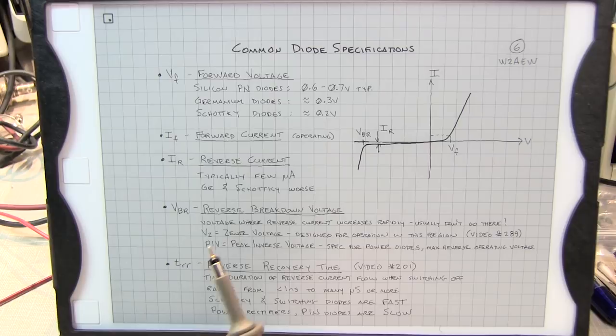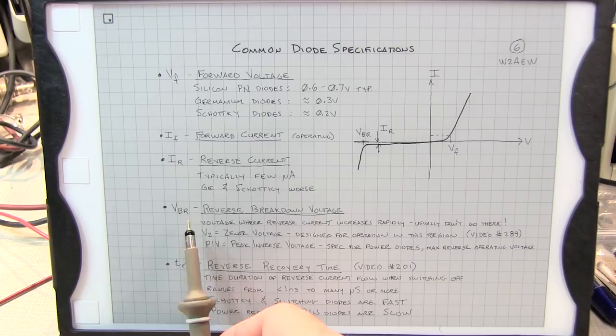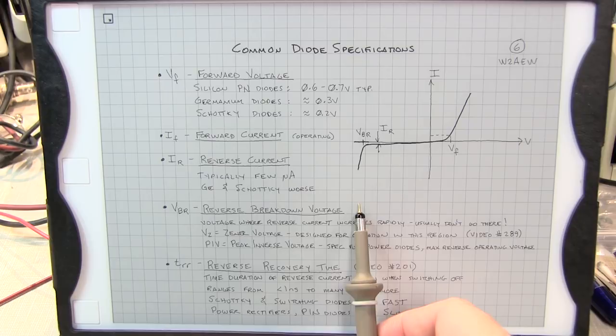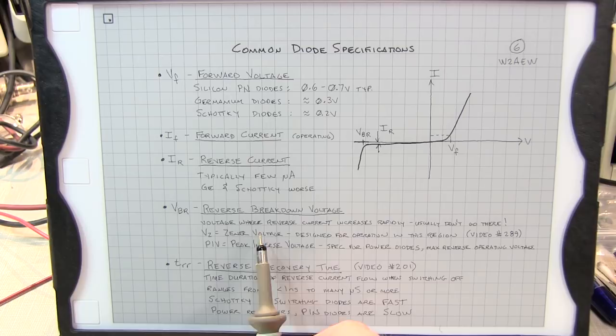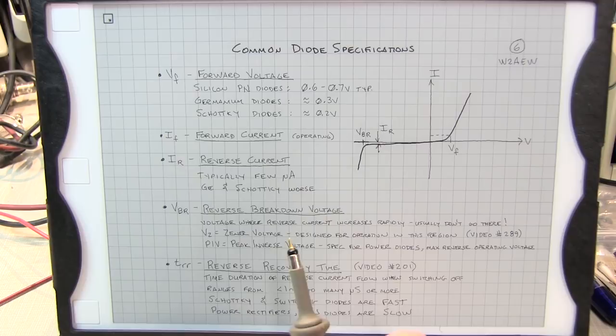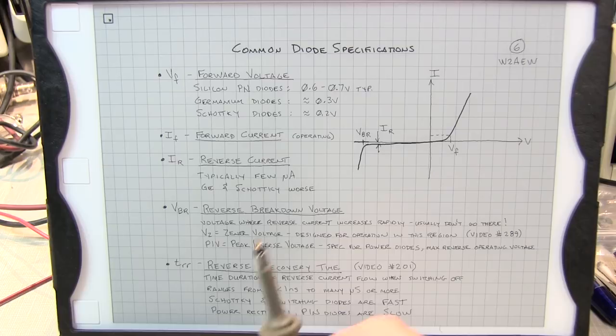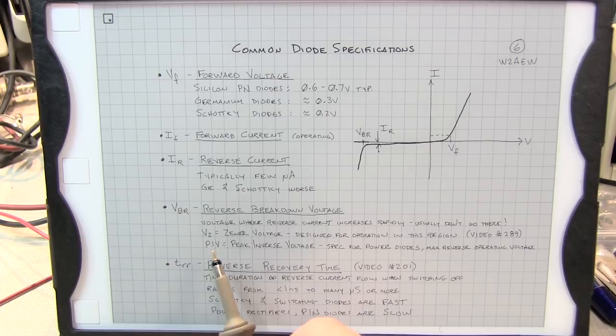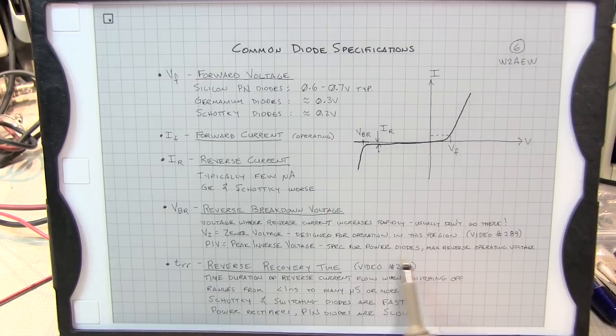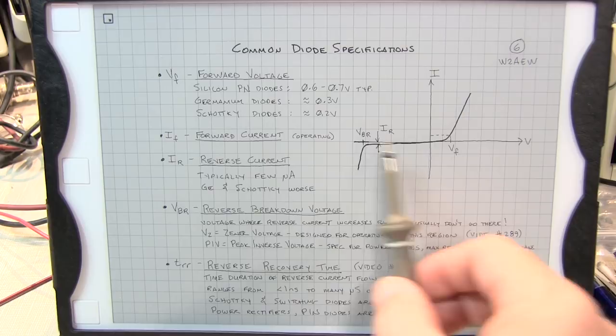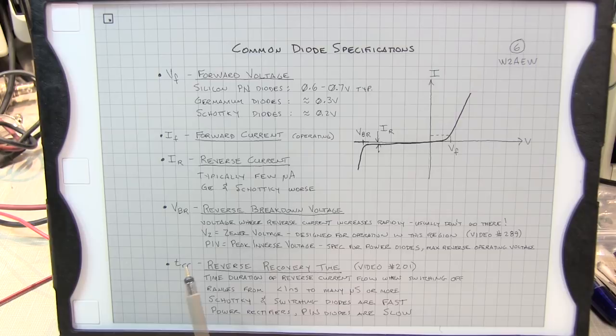Now the reverse breakdown voltage or VBR, and that's the voltage where the reverse current starts to increase very rapidly. And oftentimes you don't want to go there with the exception of zener diodes, which are specifically designed to have a breakdown or knee at a designed voltage. So they're typically designed for that. Again, video 289 talks about that. Oftentimes, diodes that are not designed to be broken down and used in this region will be rated with something called a PIV or peak inverse voltage. That's typically a spec for power diodes, which really specifies the maximum reverse operating voltage, how much voltage that will block in normal applications like rectifier applications.